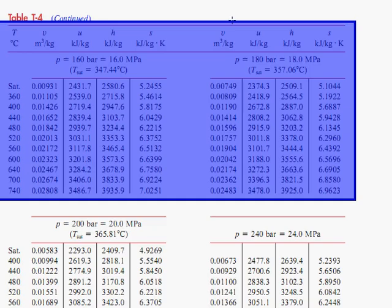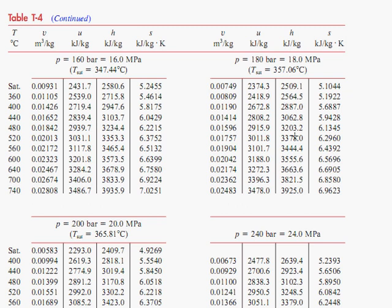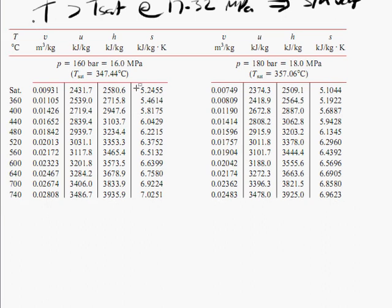So we go to the superheated vapor table and this is what it looks like. We're between 16 MPa and 18 MPa and we're between 440 and 480 degrees. So we are between this item on the table and this one and this one and this one. These are like four corners of a box and our actual state is somewhere in the middle of all those.